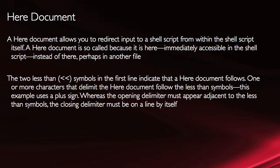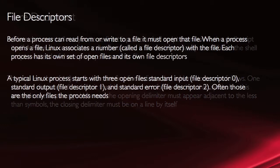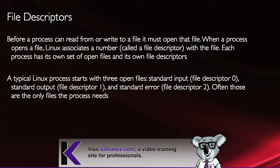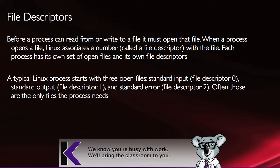There's a here document that allows you to redirect input into the shell script from within the shell script itself. The two less-than symbols in the first line indicate the here document is supposed to follow. Before a process can read from a file or write to a file, it has to open that file. You can open a file associated with a number called a descriptor. A typical Linux process starts with three open files: standard input (descriptor 0), standard output (descriptor 1), and standard error (descriptor 2).